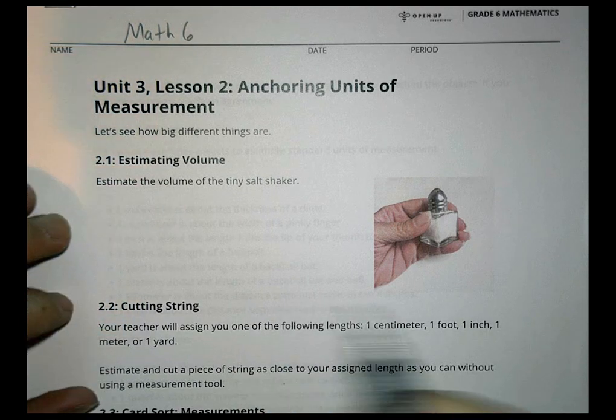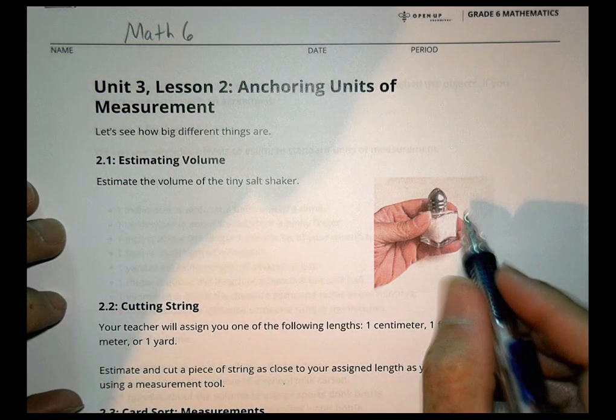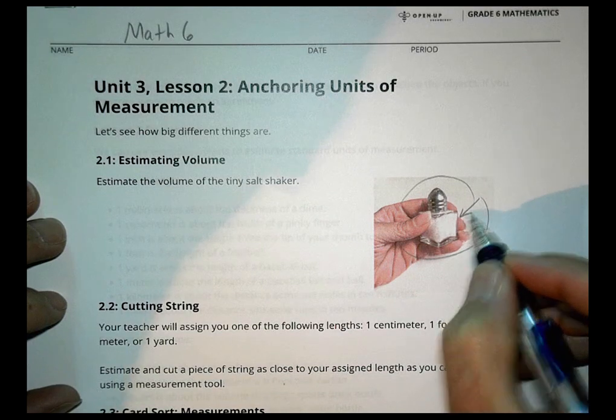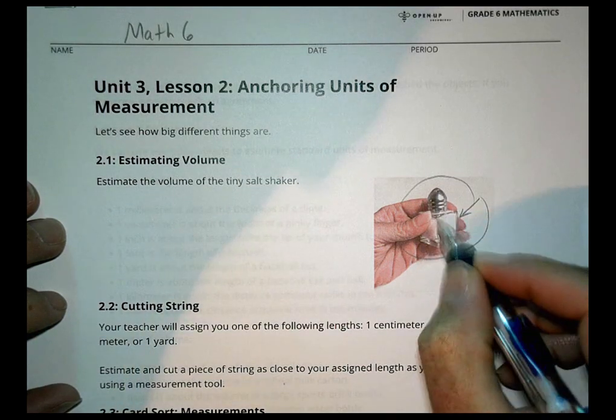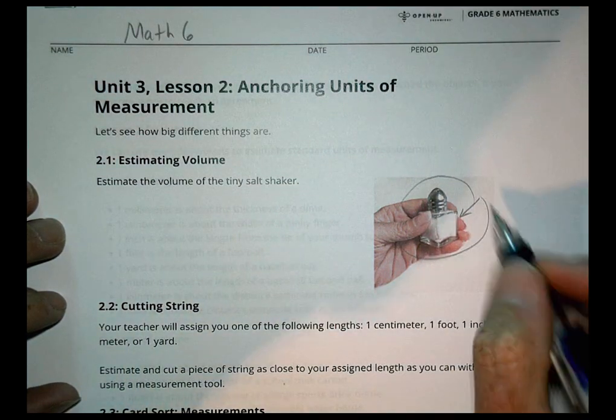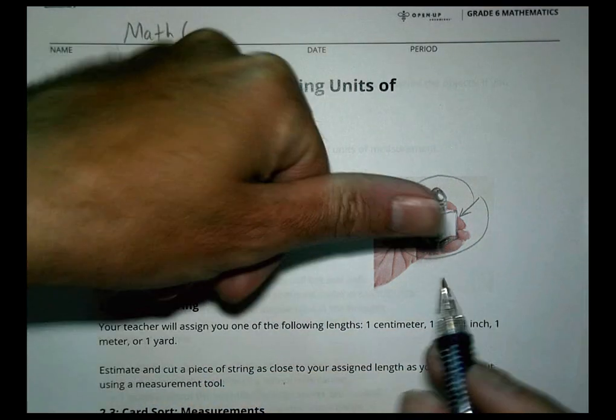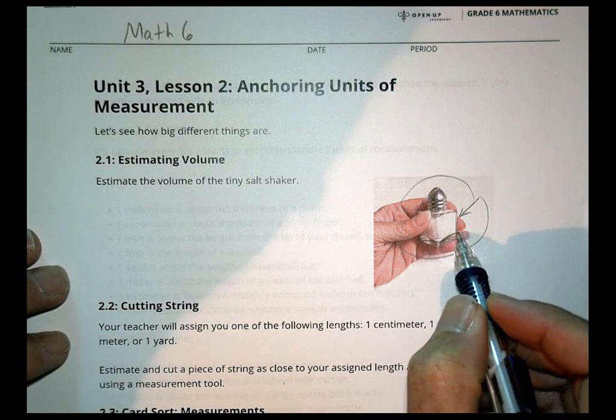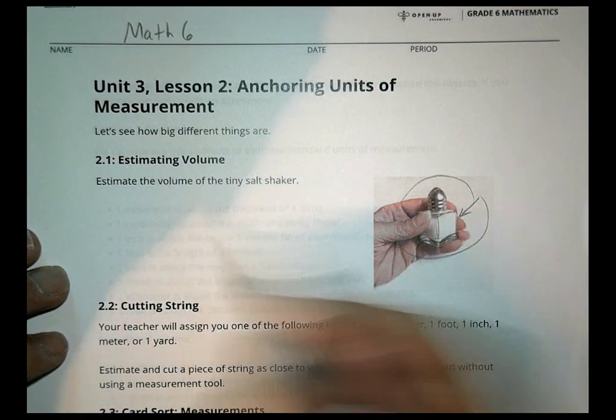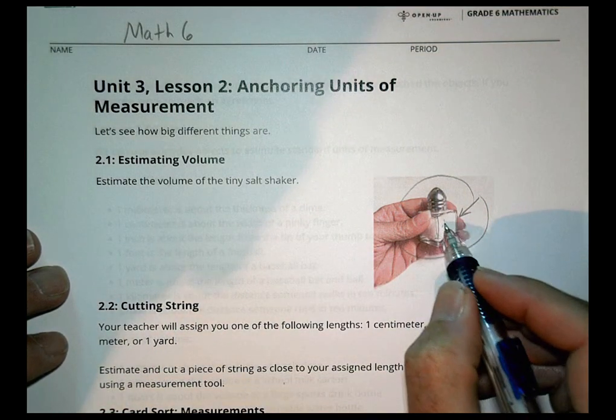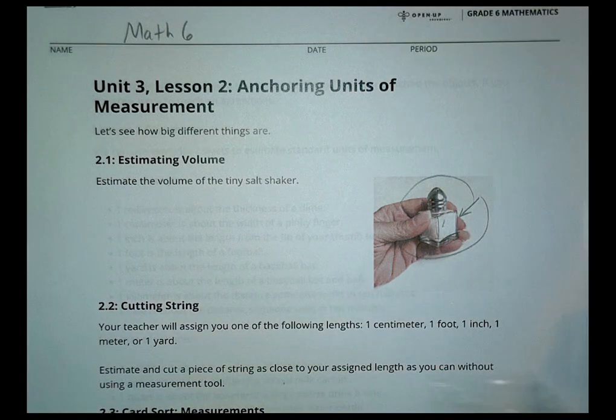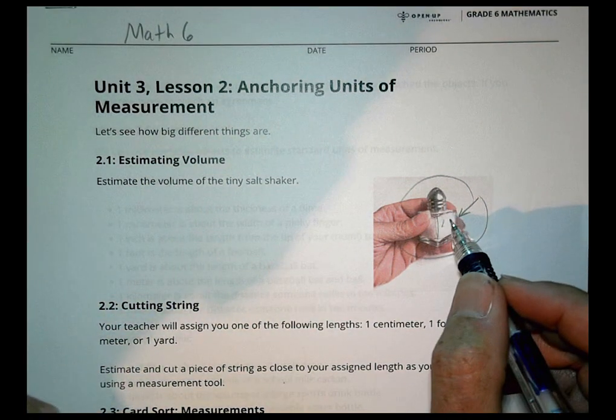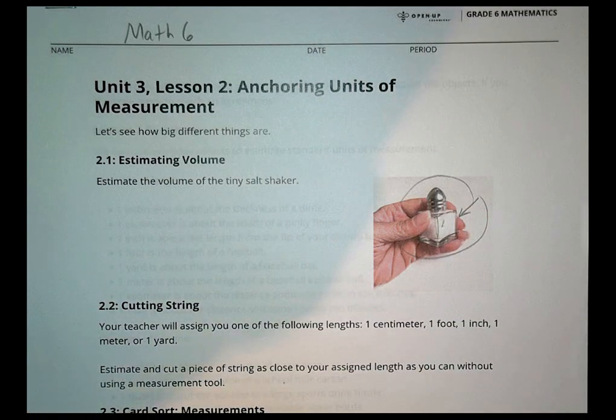So in this first activity, it says estimate the volume of the tiny salt shaker. And we've talked about volume before. So volume is going to be that space inside of that cube there. So depending on how big that might be, you can see it's like a thumb length, right? So a thumb, how long is a thumb? Is that like an inch by an inch by an inch? So is that one cubic inch maybe? Again, it's just hard to tell, but it's just something you estimate to think about what that space inside of that shape, that salt shaker is going to be.